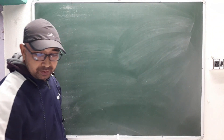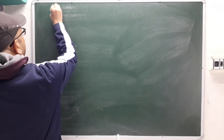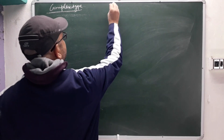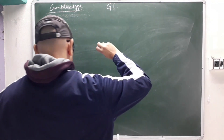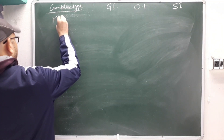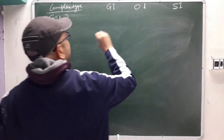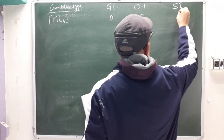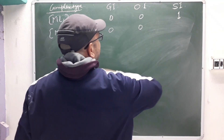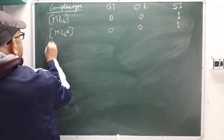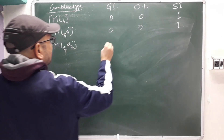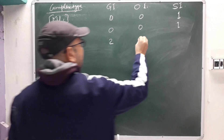Summary table for octahedral complexes: ML₆ → geometrical isomers 0, optical isomers 0, total 1 (self isomer). ML₅A → geometrical isomers 0, optical isomers 0, total 1 (self isomer). ML₄A₂ → geometrical isomers 2, optical isomers 0, total 2.